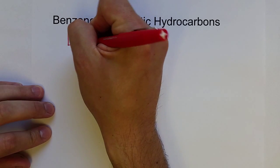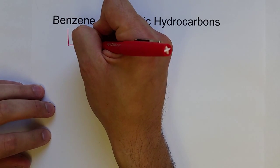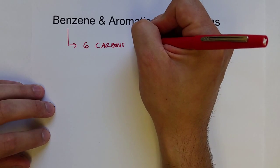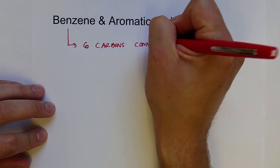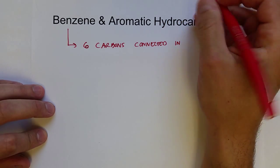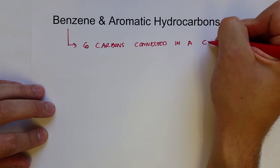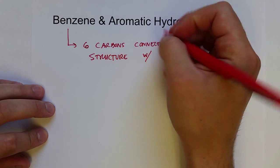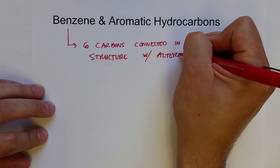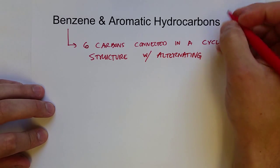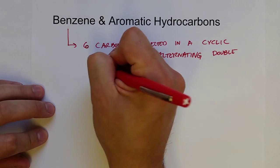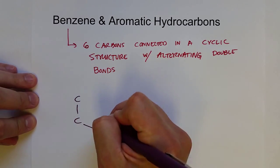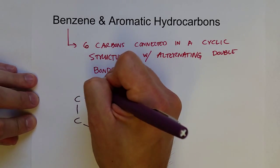Okay, benzene is a six-carbon cyclic structure, six carbons, connected in a cyclic structure with alternating double bonds. And so what this would look like is, we've got six carbons in a ring, and...